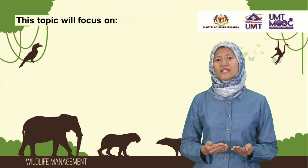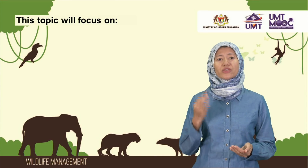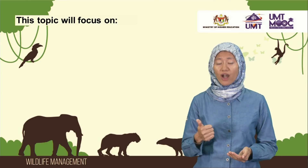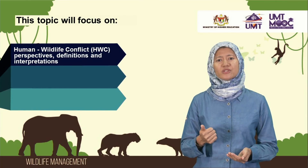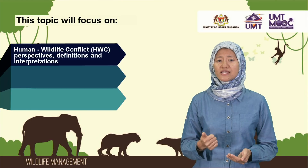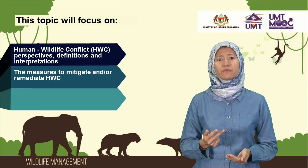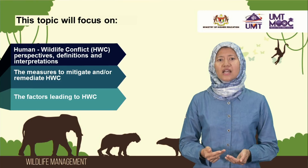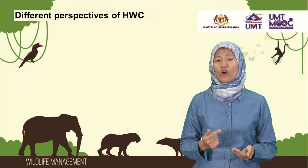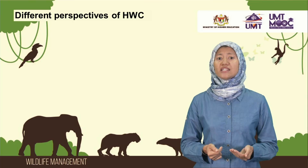You will understand why they think so by following this topic, which will focus on three main lessons: number one, the perspectives, definitions and interpretations of human wildlife conflict; number two, the possible human wildlife conflict mitigation and remediation measures; and finally, the factors that lead to human wildlife conflict. So let's get on with lesson number one on human wildlife conflict perspectives, definitions and interpretations.